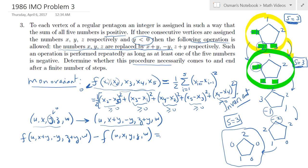So (u, x plus y, minus y, z plus y, w), that's the new state, minus the original state, which was (u, x, y, z, w). That thing comes out, believe it or not, simply as u times y plus x times y plus y squared plus y z plus y w.